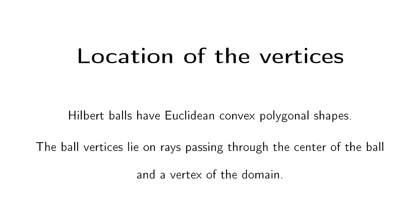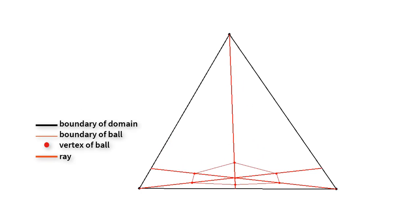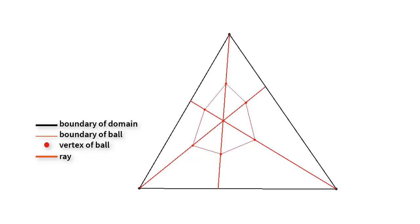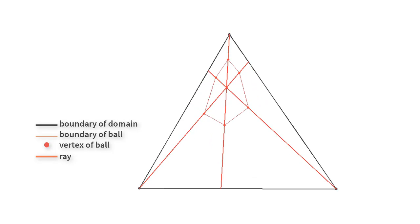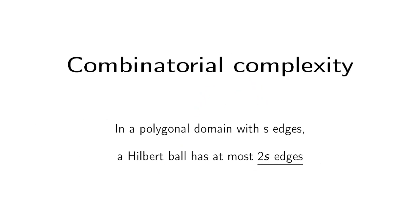We observed that Hilbert balls have Euclidean convex polygonal shapes. In all cases, each vertex of the ball lies on a ray passing through the center of the ball and the vertex of the domain. In this video, the ball moves inside the triangle and the rays are traced in thick red. The location of vertices helps us understand the combinatorial complexity of a Hilbert ball.